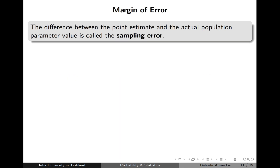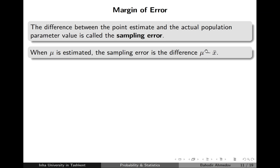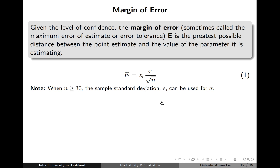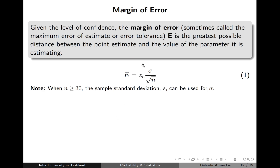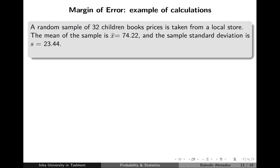When we estimate the population mean we're going to make some error. The difference between the population mean and the sample mean is the error. The error margin, or error tolerance, is calculated as the critical point multiplied by sigma — the population or sample standard deviation — divided by the square root of n, the sample size. Note this works for samples with more than 30 items, according to the central limit theorem, in which case the sample mean has a normal distribution.